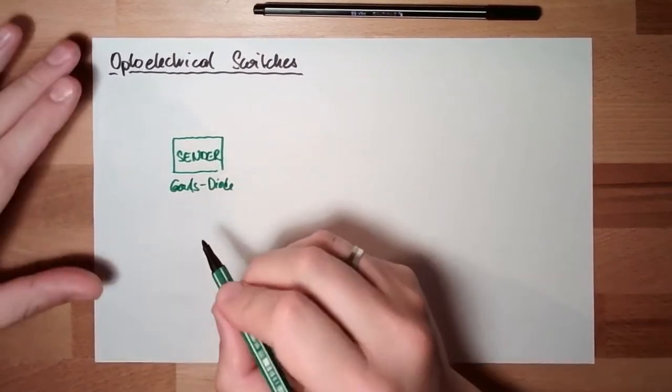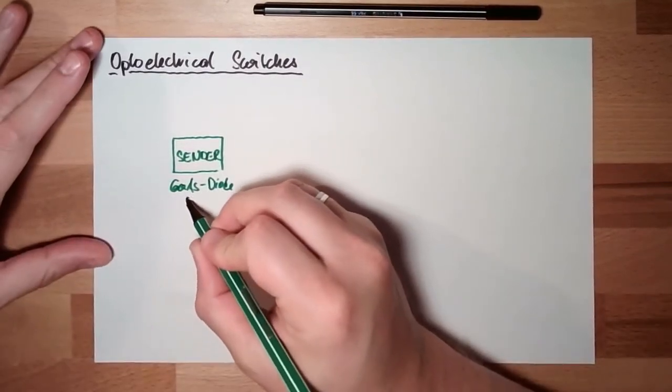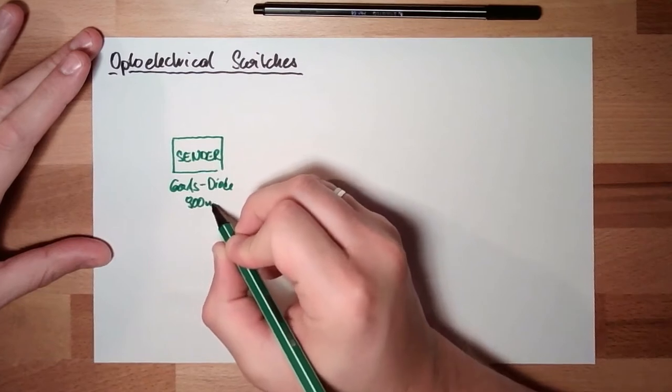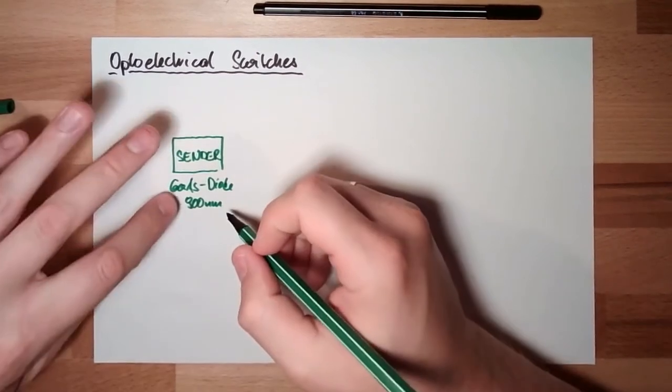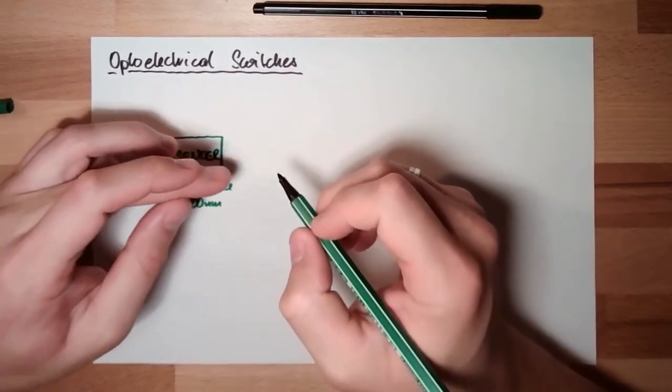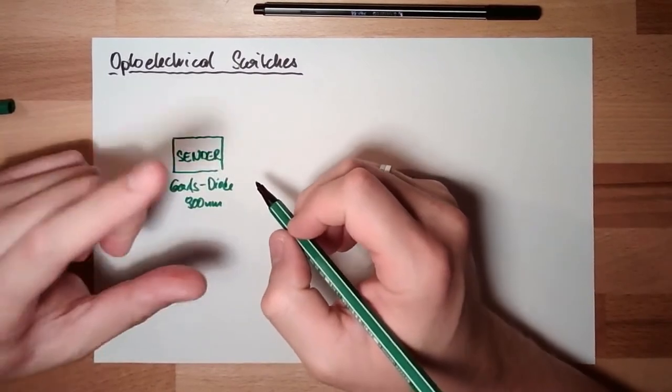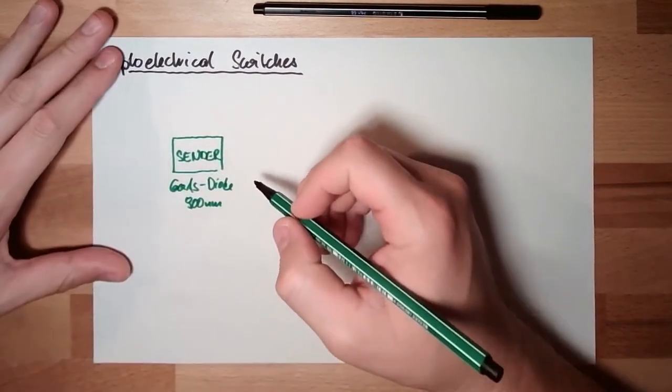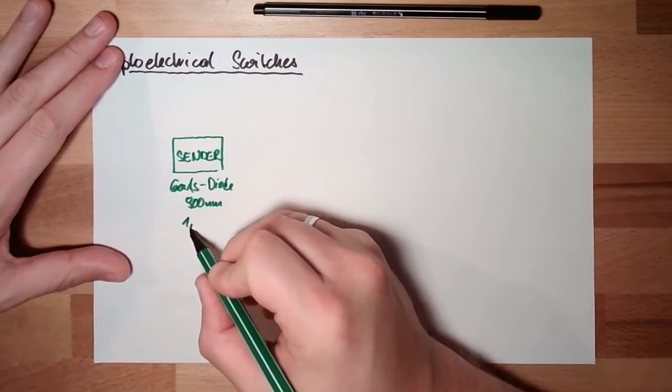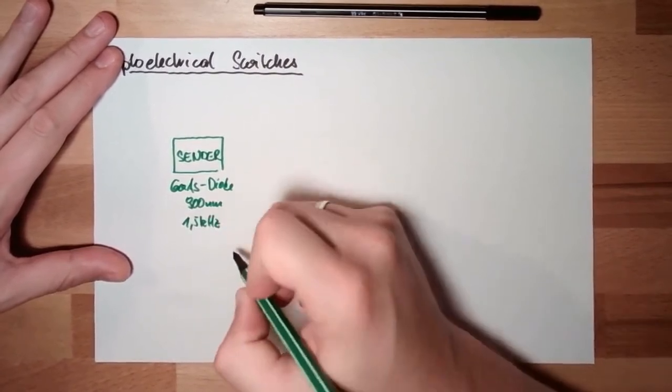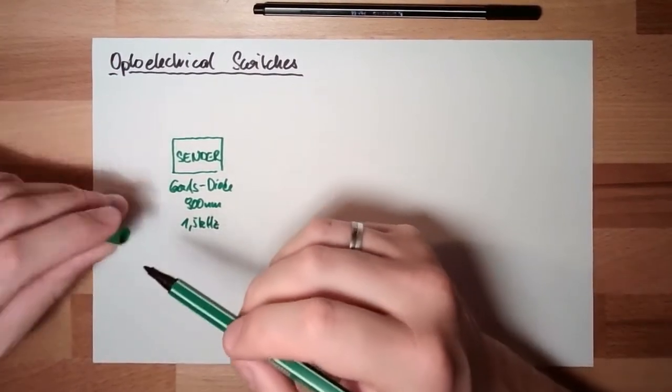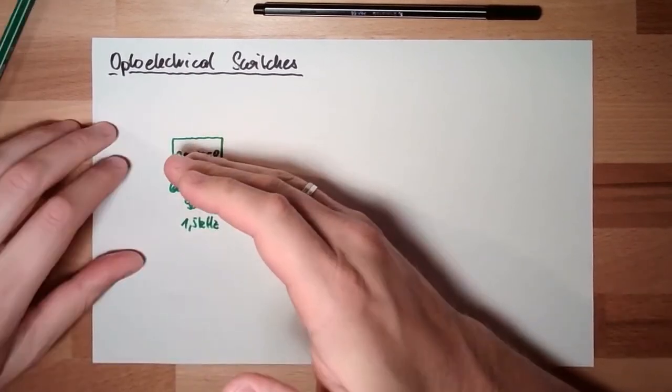And we have around, let's say, 900 nanometer wavelength here. So this means infrared. And this light is pulsed with around 1.5 kilohertz. Why? I will explain later.